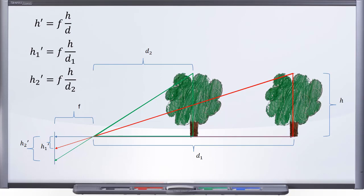To compare the apparent heights of the trees, let's take them as a ratio, h2 prime over h1 prime. That's right here. f is the same for both, so let's cancel that out. And since both trees are actually the same height, the h's will cancel too. Finally, we're left with this equation again. The apparent size of an object is inversely proportional to its distance from the viewer.